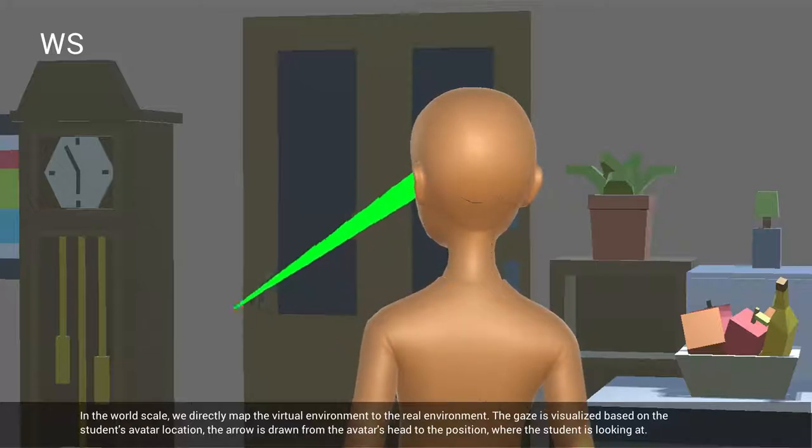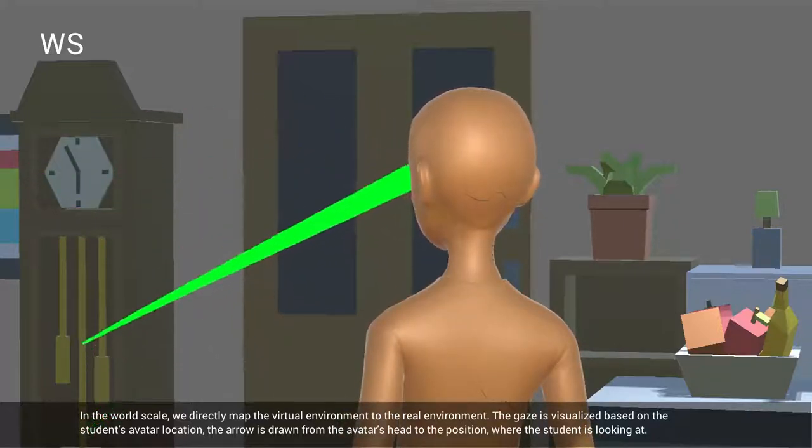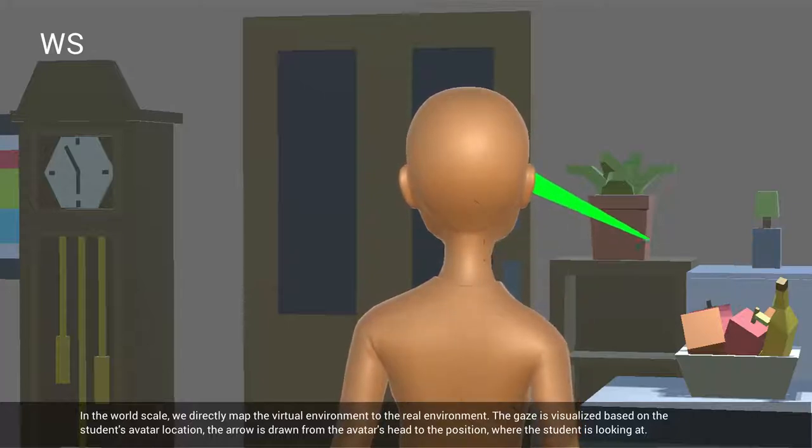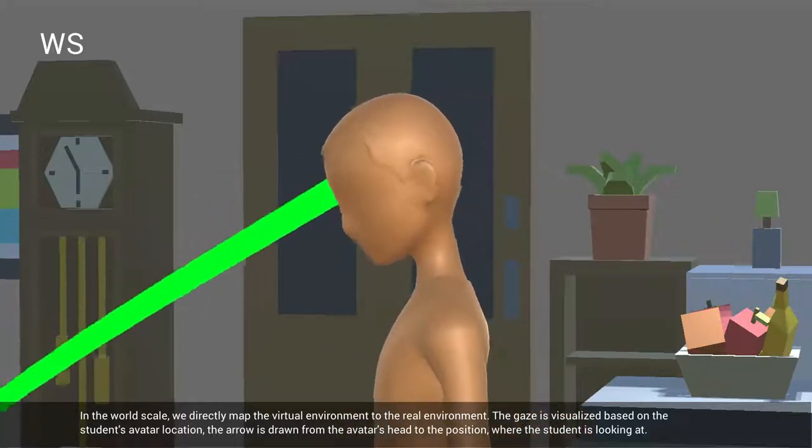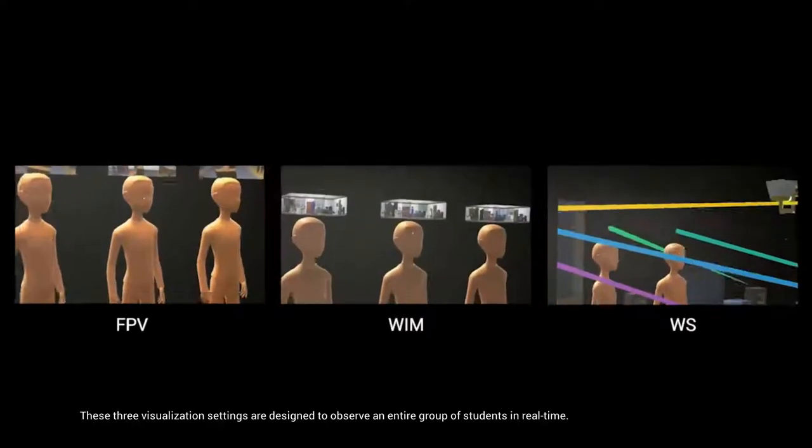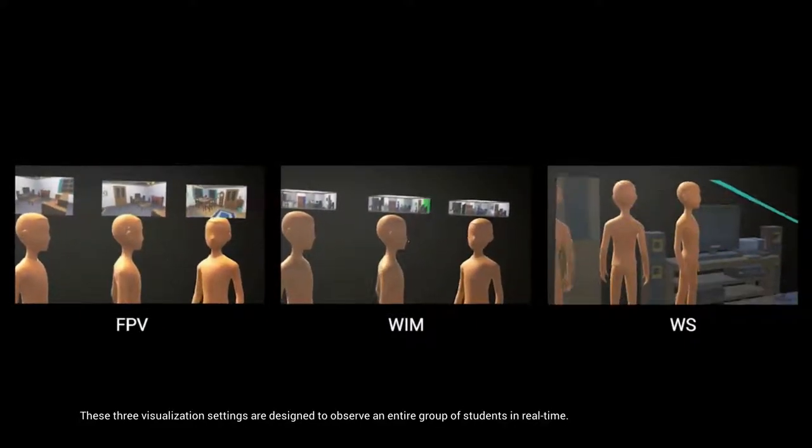In the world scale, we directly map the virtual environment to the real environment. The gaze is visualized based on the student's avatar location. The arrow is drawn from the avatar head to the position where the student is looking at. These three visualization settings are designed to observe an entire group of students in real time.